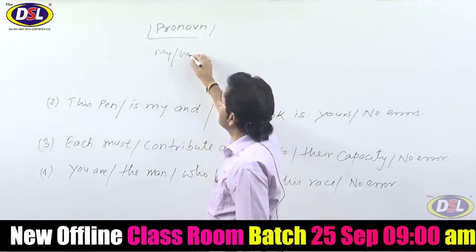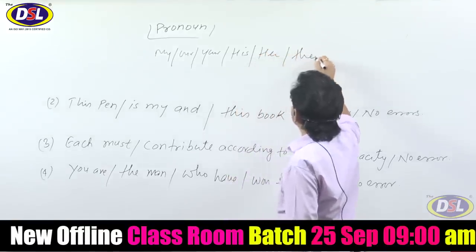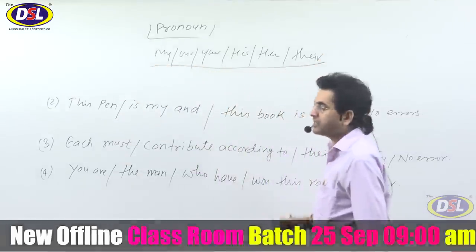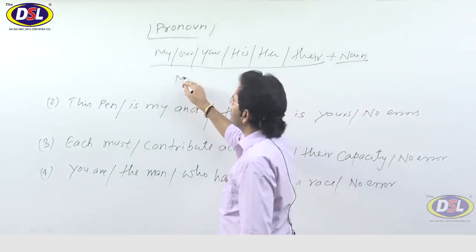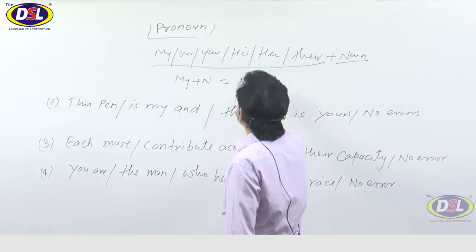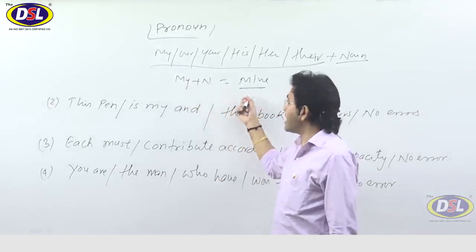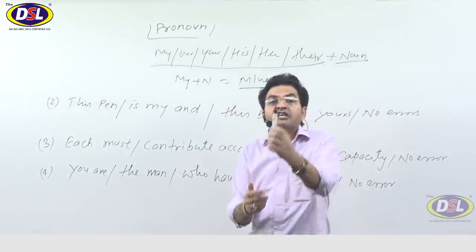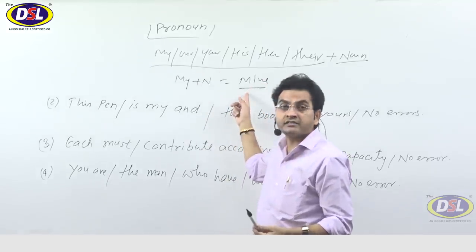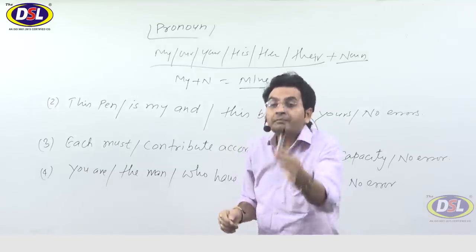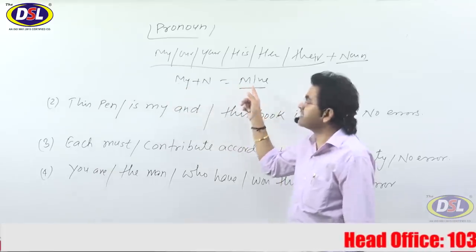Look here — my, our, your, his, her, their. These are possessive adjectives. Remember the rule: 'my + noun' means mine. There will be a noun after 'my,' but there will not be a noun after 'mine.' Like: 'this pen is my' is wrong. It should be 'this pen is mine.' Or say 'this is my pen' — my pen, my book, my table, my building, my house. But 'this building is mine,' 'this pen is mine.'